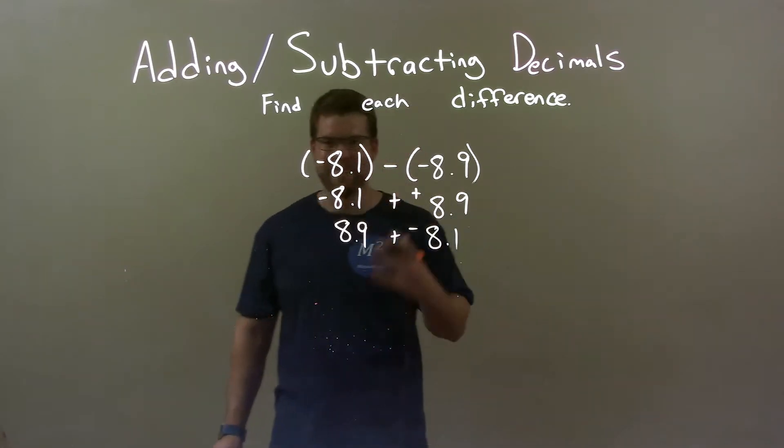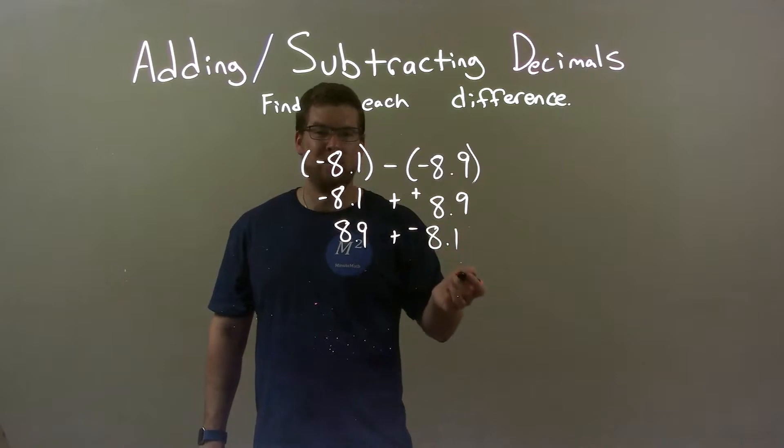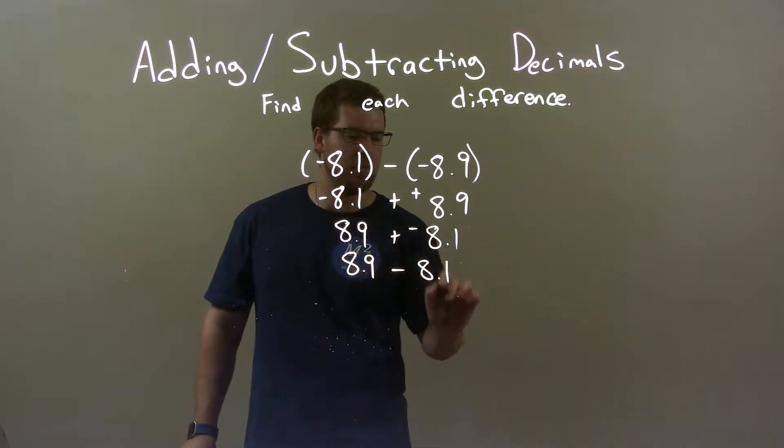All right, where do I go from there? A lot of steps here. 8.9 plus a negative 8.1, that's the same thing as subtraction: 8.9 minus 8.1.